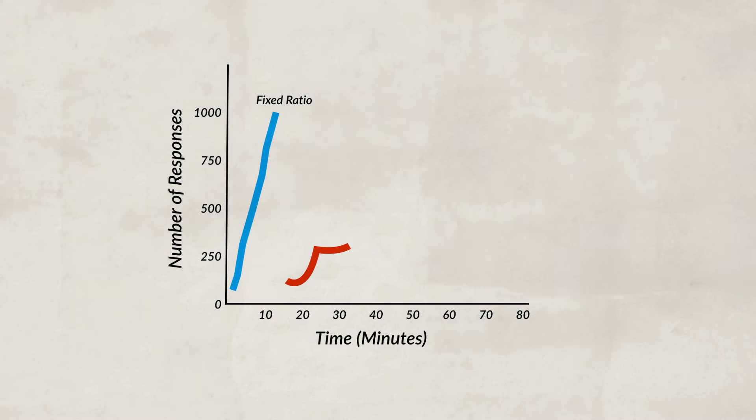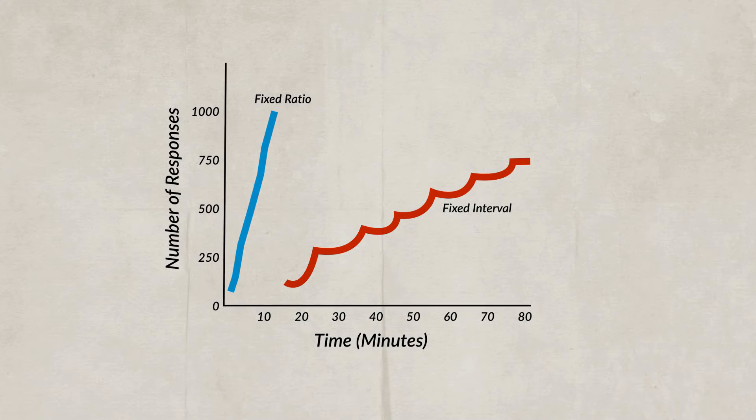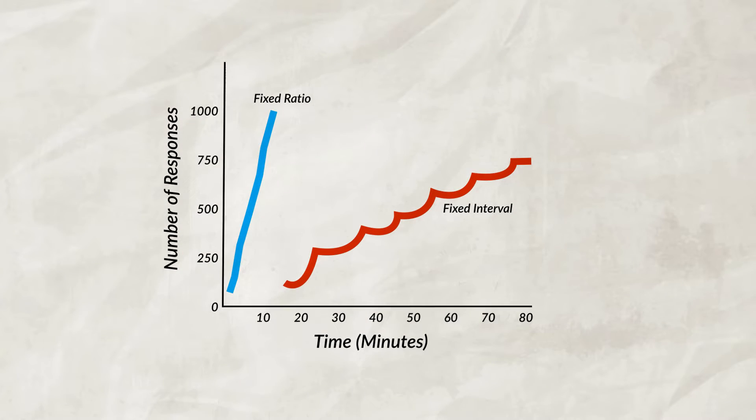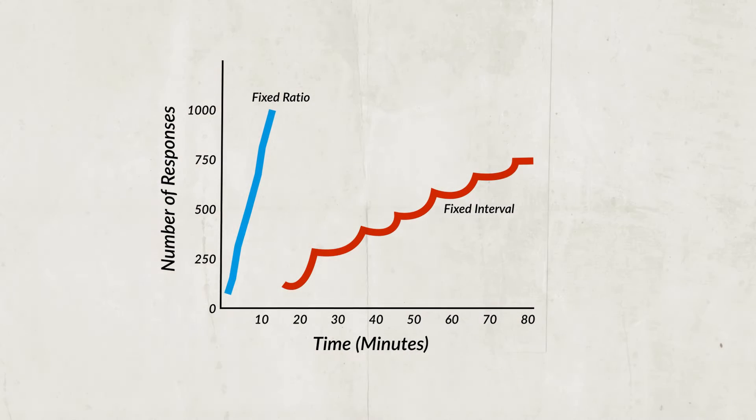Next is a fixed interval schedule, which reinforces a response after a set amount of time. For example, a traditional salary job where you get paid every two weeks — it doesn't matter how much you produce, you still get paid on that fixed schedule. With this type of schedule, more responses often occur right before the payout. For instance, workers are more likely to work harder right before the end of the month to try to get an employee of the month award.